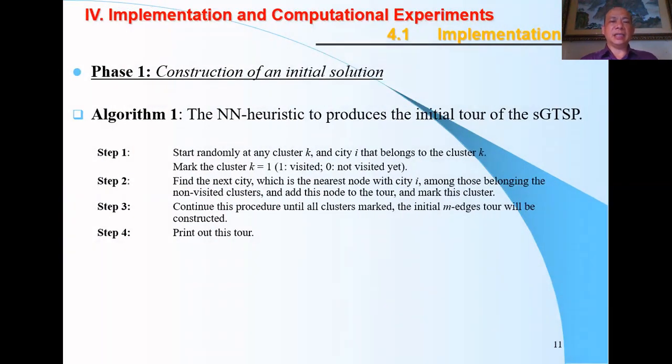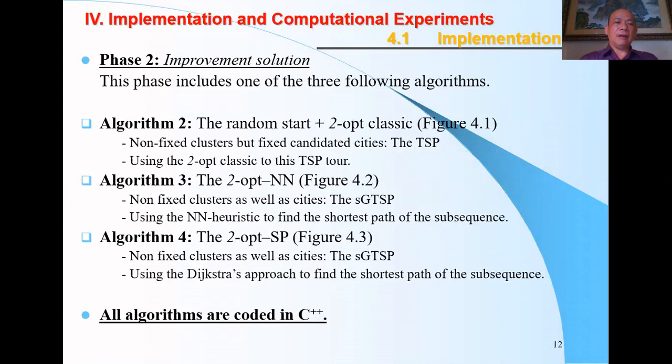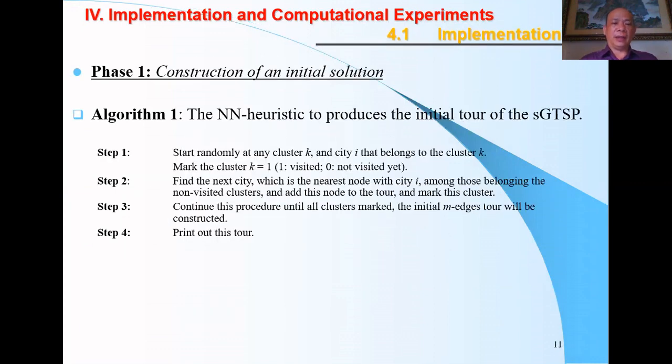Here is the implementation for our research. Phase one: construction of the initial solution by using the nearest neighbor heuristic to produce the initial tour of the symmetric GTSP by four steps. We call this Algorithm 1.